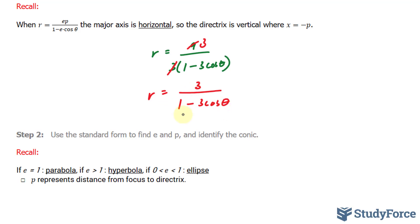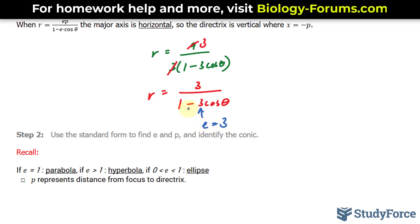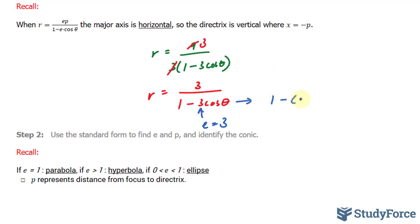Take a closer look at what we've been given here. We have 3 cosine theta. Our e value has to be positive 3. And you're probably wondering, it's negative 3, how is it positive? Don't be fooled. This is the same thing as saying 1 minus plus 3 cosine theta. And this is why e equals 3.